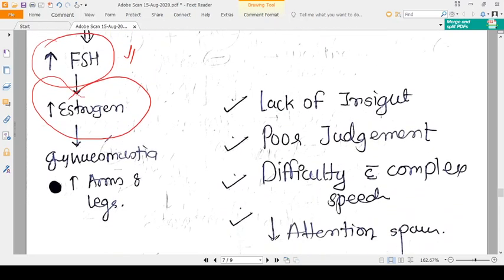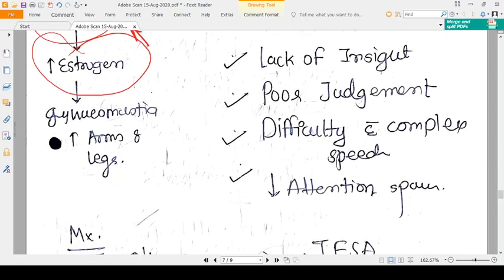Estrogen will be produced more because there will be less negative feedback on FSH. So FSH is increased, so estrogen will be higher. Due to estrogen, there will be gynecomastia, breast development, and arm and leg length will be higher. The person has oligospermia and azoospermia.